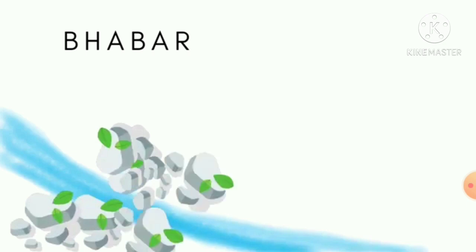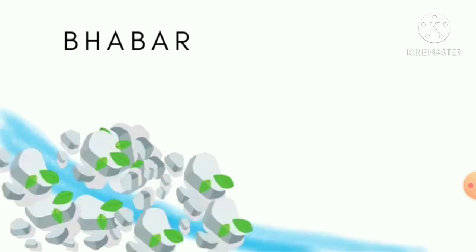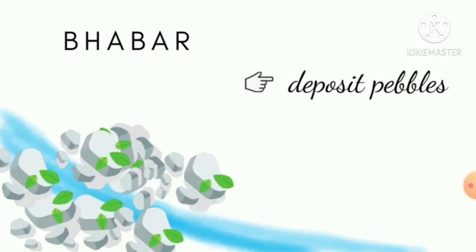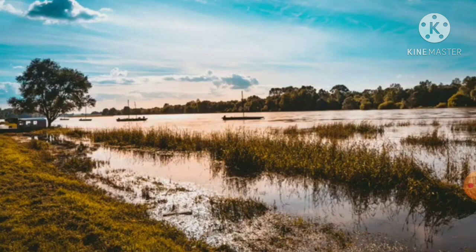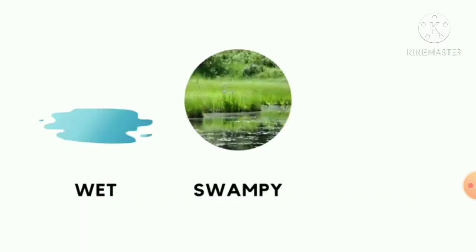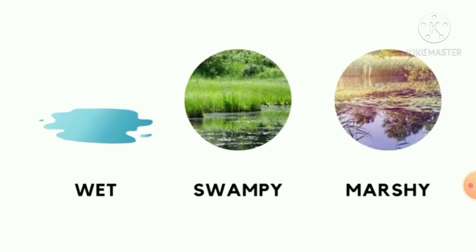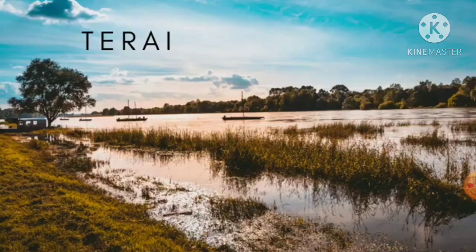When rivers come from the mountainous region or the Shivalik hills to the plain region, boulders and sediments are deposited at the foothills. There is also a wet, swampy, marshy land which is the second important region of the northern plains.